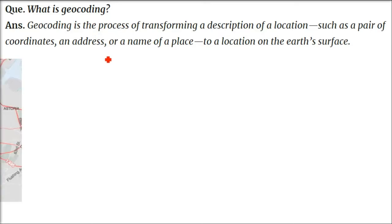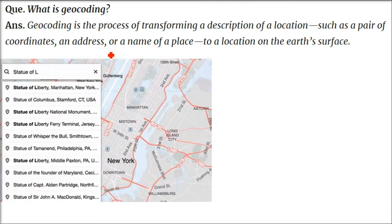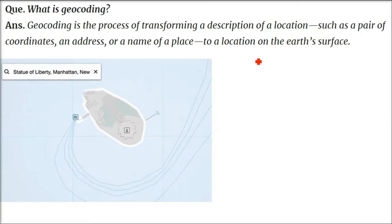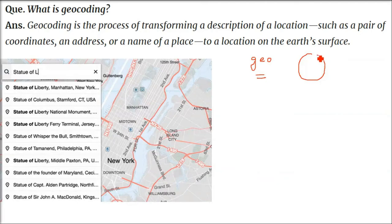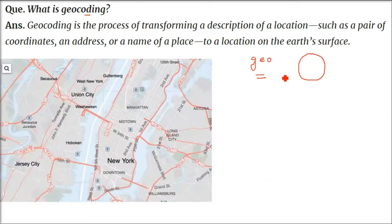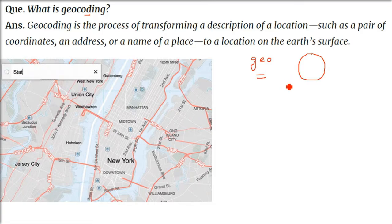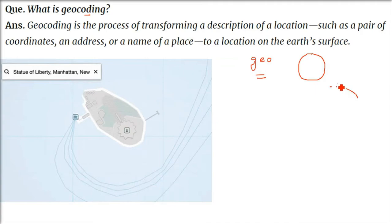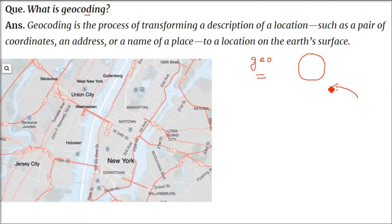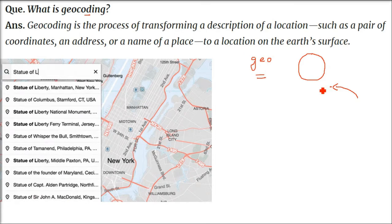What is geocoding? Before we start answering this, there is always the word 'geo' along with various combinations. 'Geo' means Earth — it is about our planet. So this is not the coding we do in programming. Geocoding is the process of transforming a description of a location.